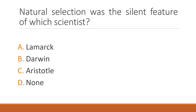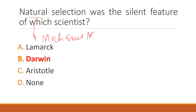Natural selection was the salient feature of which scientist? The correct answer is option B: Darwin. Natural selection as a mechanism of evolution was proposed by Darwin, and Darwin was the first scientist to provide evidence for it.